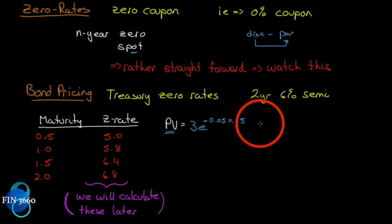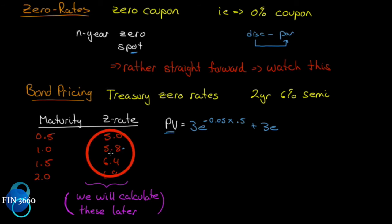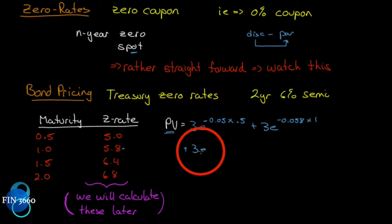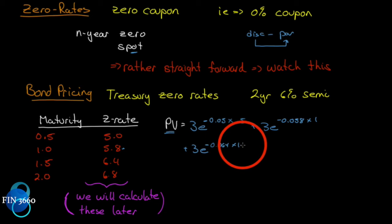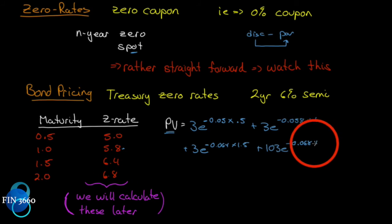The first cash flow is discounted, plus 3·e^(−0.058 × 1) for the second cash flow using the one-year spot rate, plus 3·e^(−0.064 × 1.5) for the third, plus the last coupon and future value of 103·e^(−0.068 × 2).